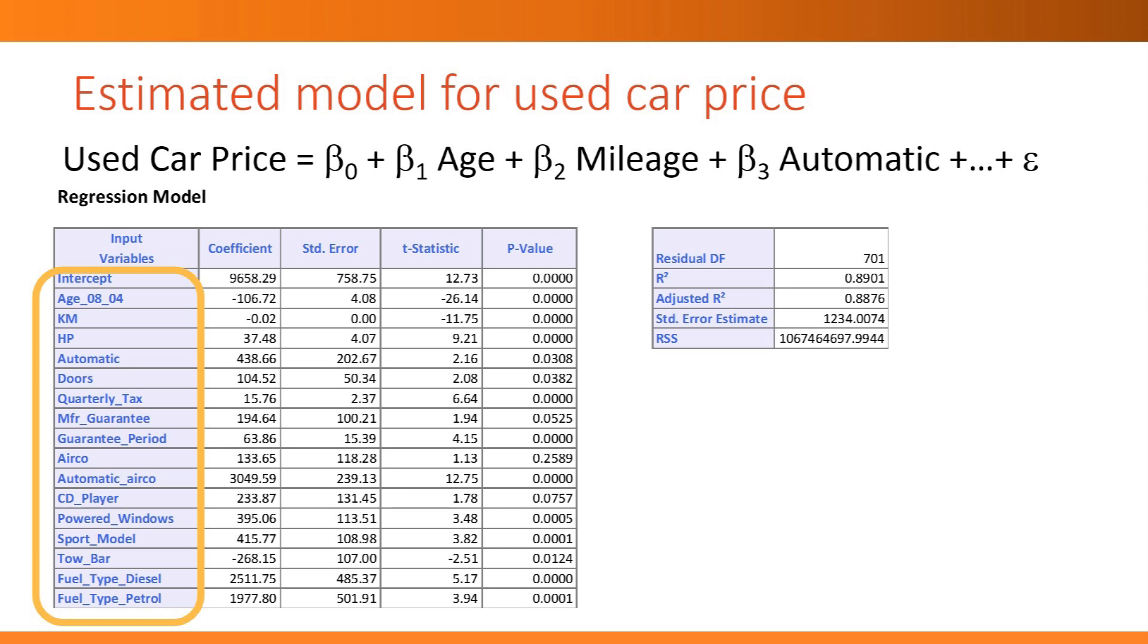We then fit a linear regression to our sample using some software. The output will look something like the one shown here. We see the list of independent variables in the model and their corresponding coefficients. These are the beta coefficients that were estimated by the software. We also get standard errors, which tell us about variation due to taking a sample. The p-values are used for inferring the effects of each car feature to the population of cars.